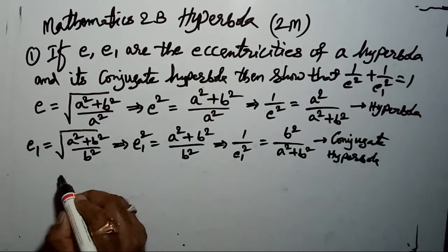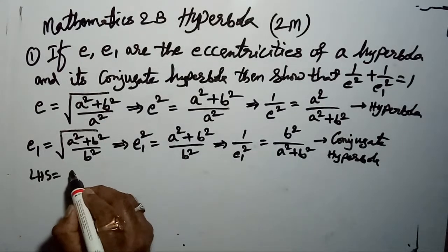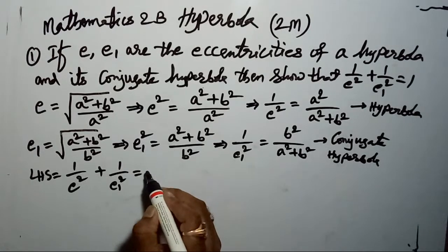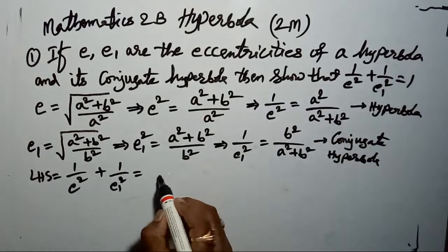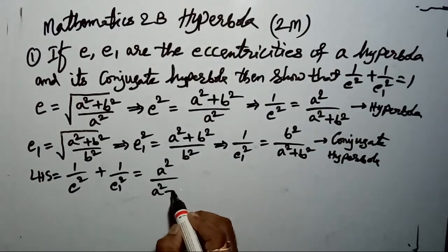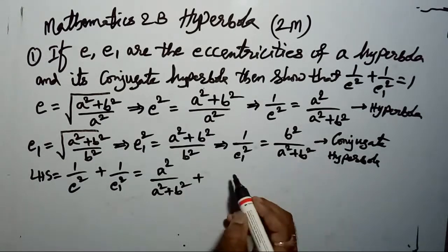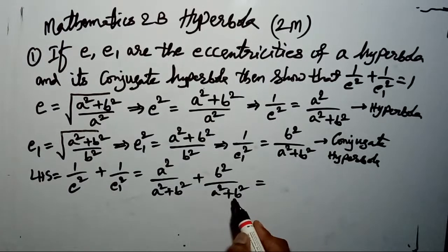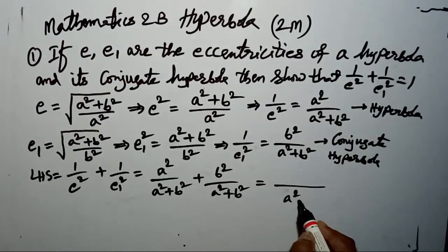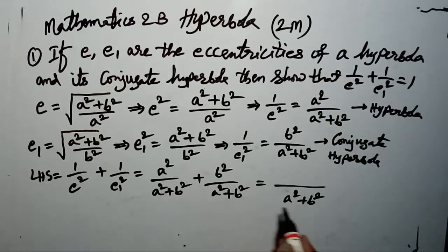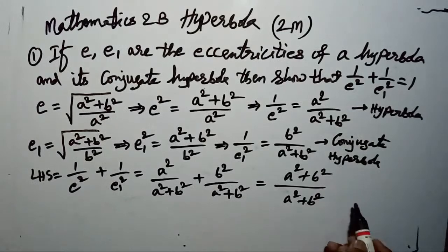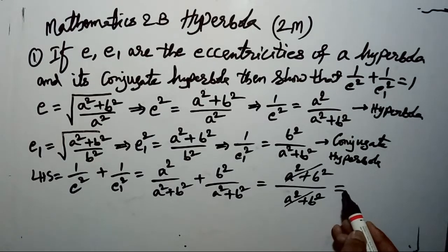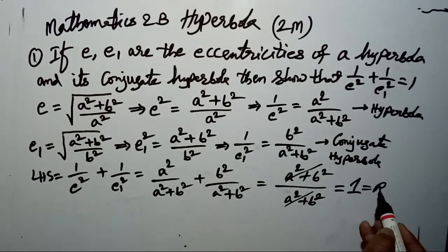Now we take the LHS. We need to prove: 1/E² + 1/E₁² = A²/(A² + B²) + B²/(A² + B²). The LCM is (A² + B²), and the numerator becomes A² + B². Since numerator and denominator are the same, they cancel, and the remaining answer is 1, which equals the RHS.